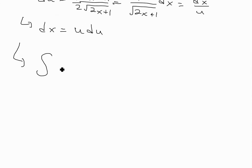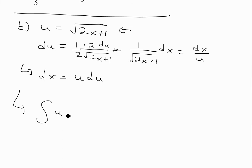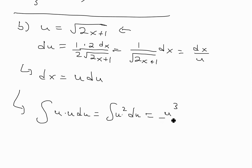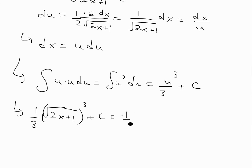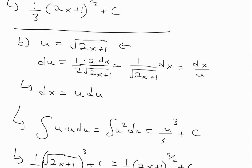Substituting into the integral: we have the integral of u — since u equals the square root of 2x plus 1 — times dx, which is u du. So this becomes the integral of u squared du. The antiderivative is u cubed over 3 plus C. Plugging back in u equals the square root of 2x plus 1, which is 2x plus 1 to the one-half, cubed gives 2x plus 1 to the 3 over 2, so the answer is one-third times 2x plus 1 to the 3 over 2, plus C — the same answer as part A.